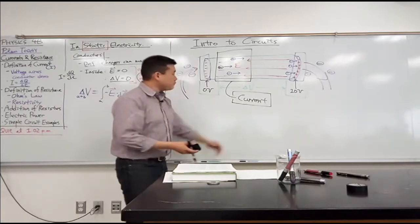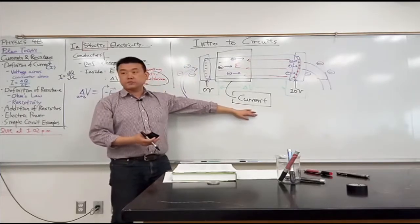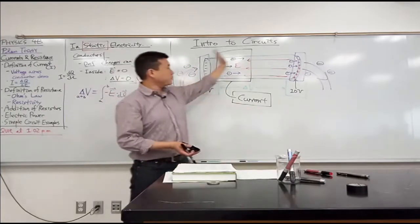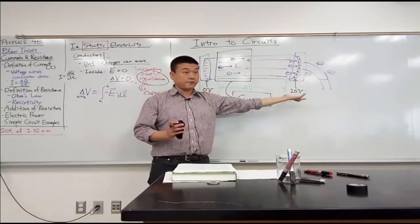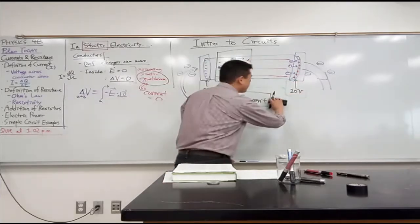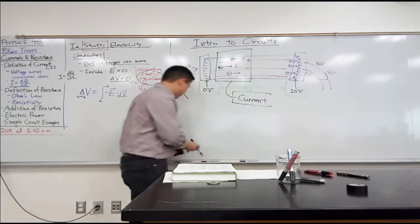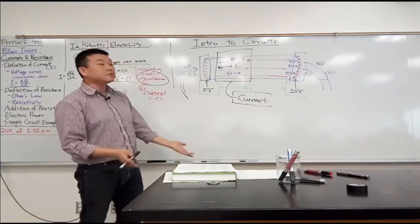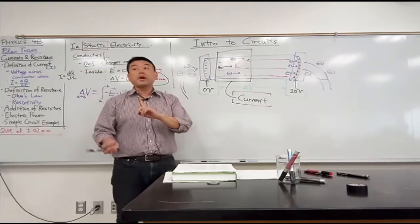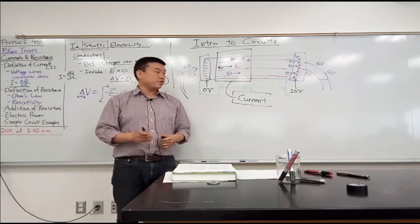With current, we are trying to measure a flow rate of how quickly the charges are flowing. How do you think we should measure it? What's reasonable? Let me put it this way: In what unit should we measure current?